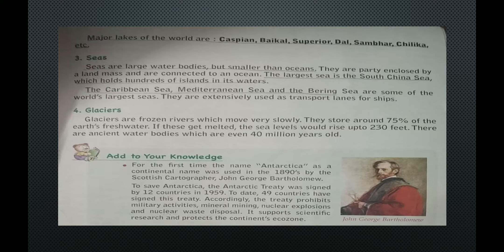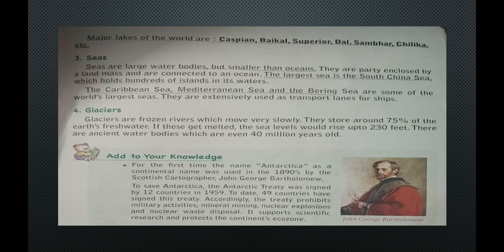Glaciers are frozen rivers which move very slowly. They store around 75% of the earth's freshwater. If these were to melt, sea levels would rise up to 230 feet. They are ancient water bodies, some even 40 million years old. Now we are concluding our chapter. All the exercises and question answers will be discussed in our next video. Your home assignment is to read the chapter carefully and learn all the names of the continents, oceans and other features. Thank you everyone.